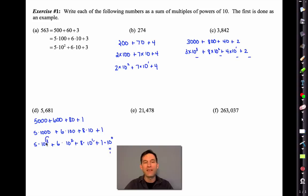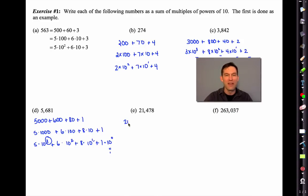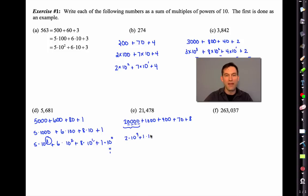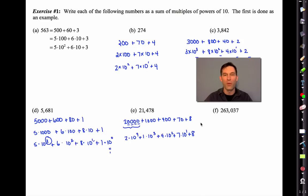We can just keep making these numbers larger and larger, and what that does is dictate the highest power. For example, 21,478 — that's going to be 20,000 plus 1,000 plus 400 plus 70 plus 8. You can always figure out the power of 10 you're working with by counting how many zeros you have. So this is 2 times 10 to the fourth plus 1 times 10 to the third plus 4 times 10 to the second plus 7 times 10 to the first plus 8. Now pause the video and try letter F.